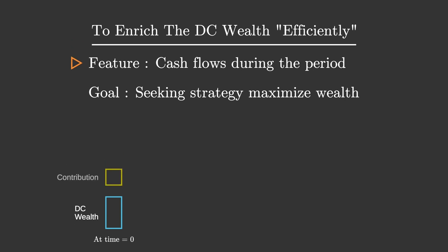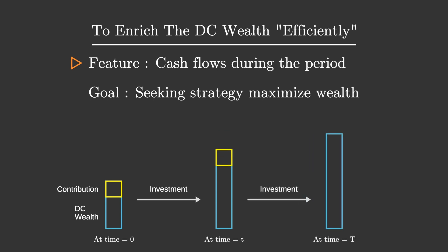A unique feature of the actuarial DC pension model is that cash flows from contributions are generated during the period of funded investment. Normal portfolio theory does not take this into account. Based on this feature, this video provides flexible portfolio optimization.